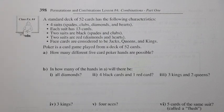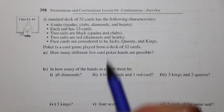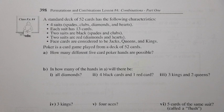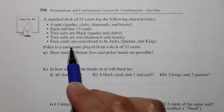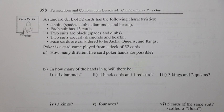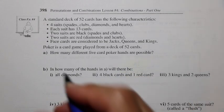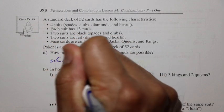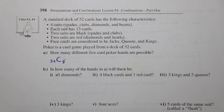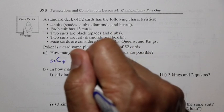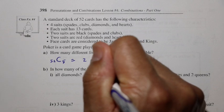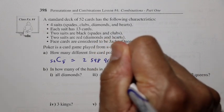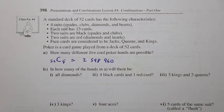Class Example 4 requires understanding a standard deck of 52 cards: there are 4 suits — spades, clubs, diamonds, and hearts — each with 13 cards. Two suits are black (spades and clubs) and two are red (diamonds and hearts). Face cards are jacks, queens, and kings. Poker is played from a deck of 52 cards. How many different 5-card poker hands are possible? Out of 52 cards, we're selecting 5 and we don't care about the order in which we receive those 5 cards. So 52C5 equals 2,598,960 — about 2.6 million possible poker hands.